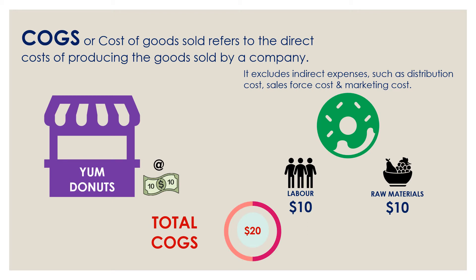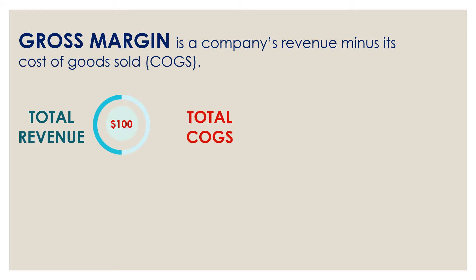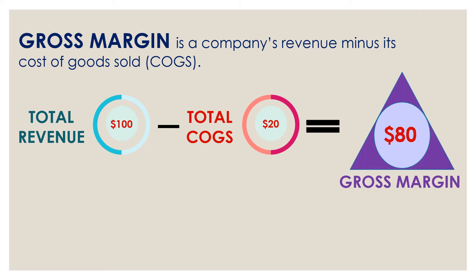Now let's look at the next topic, which is gross margin. Gross margin is a company's revenue minus its cost of goods sold. In the case of Yum Donuts, the total revenue is $100 and the total COGS is $20, so the gross margin is $100 minus $20, which equals $80. Another extension to gross margin is gross margin percentage.